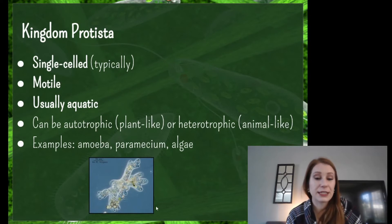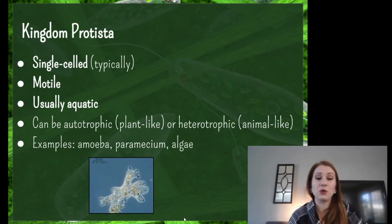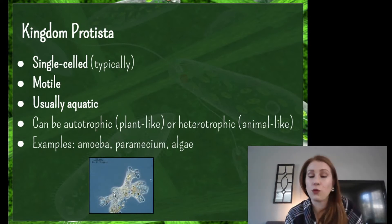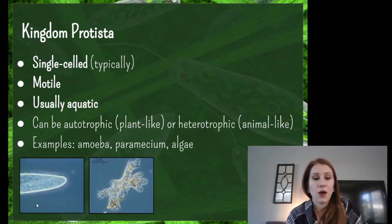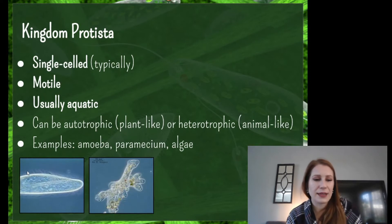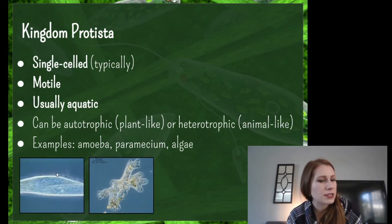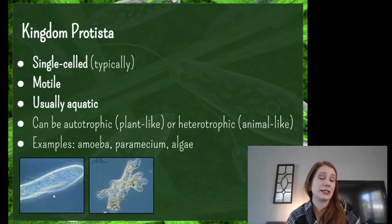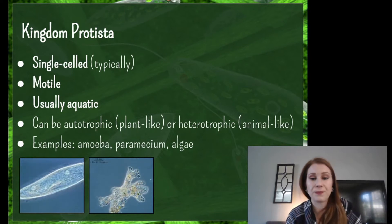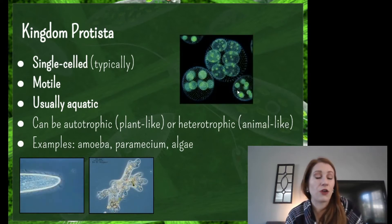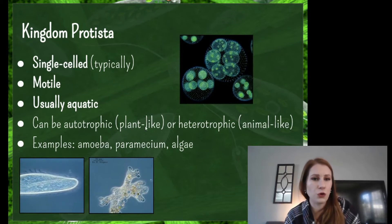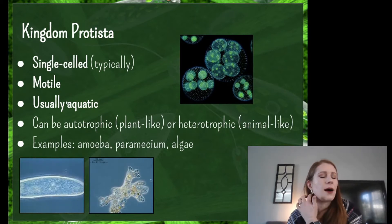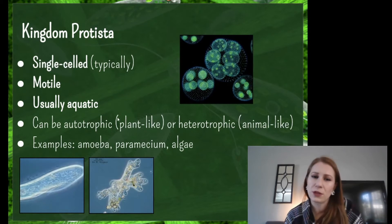Here we've got an amoeba — you can see it moving very slowly, but it's able to do that so it can go and capture some food, or make its own food by having access to sunlight. The second example is a paramecium, with little hair-like projections on the outside allowing it to swim through the water. Over here we have algae — they are green, so they do have chloroplasts, making them the autotrophic protists. They're plant-like, but single-celled and usually aquatic. Algae has to live in water to survive.